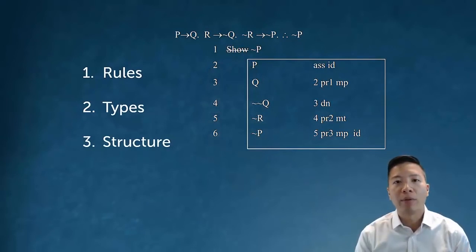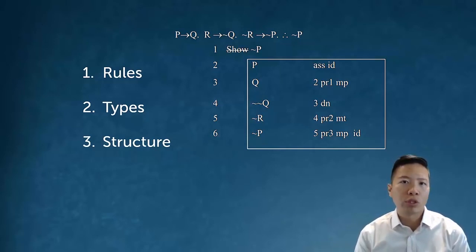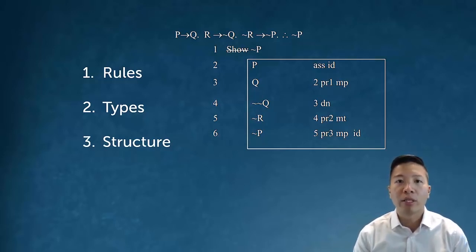Fundamentally, a derivation is made up of three things that we need to cover in today's lecture and become comfortable with. First, we need to know all the rules that we are allowed to use. We need to know what derivation types are allowed. And finally, we just have to have a good grip on the basic structure of a derivation.